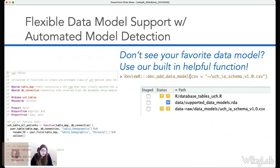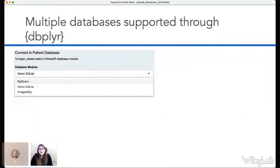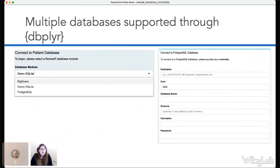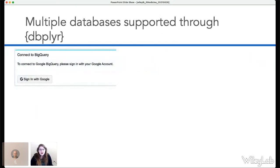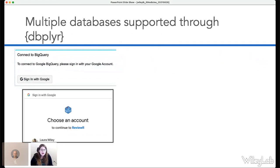We do this for all of our internal data marts on campus so we can customize ReviewR for each project. Databases are also critical — right now we support two primary databases: Google BigQuery and Postgres. We also have a demo SQLite database that lets you play around with ReviewR without connecting to real clinical data. For Postgres there's a standard connection panel where you enter your host name, credentials, and which database you want to use.